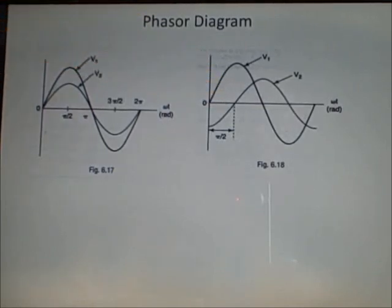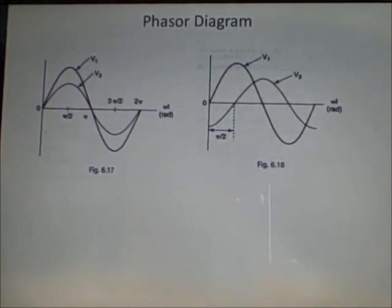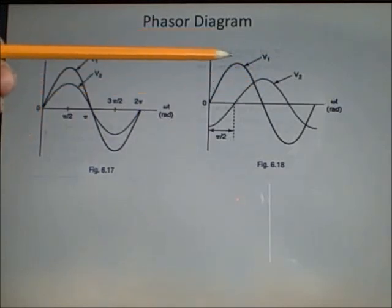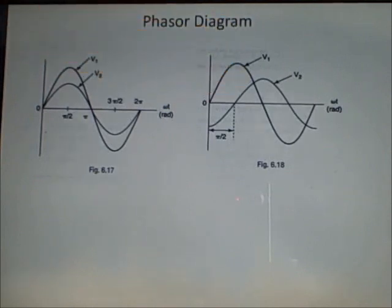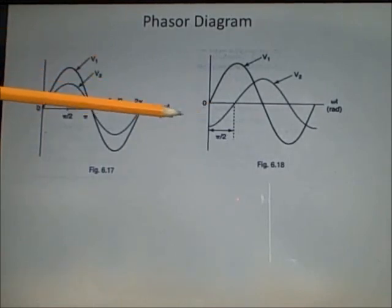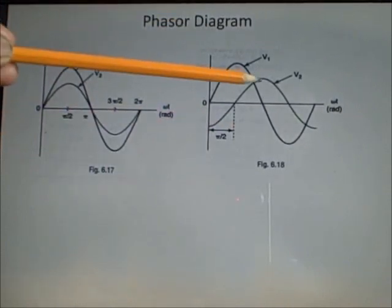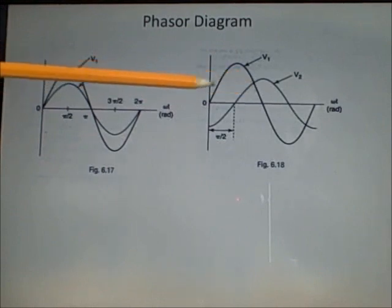The same diagrams are shown for v1 and v2 on the right side of the screen, but in this case you can see that v2 reaches its maximum voltage sometime after v1. The time delay is indicated by pi divided by 2 — in other words, v2 reaches its peak voltage pi divided by 2 after v1.